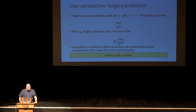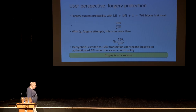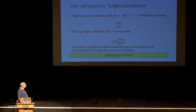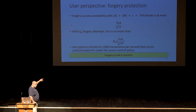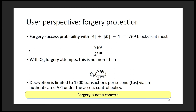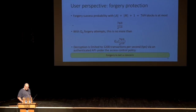What is the forgery protection? The forgery success probability in AES-GCM depends on the longest message. The number of blocks in the AAD plus the number of blocks in the message plus one — at most 769 blocks. So the forgery probability is 769 over 2^{128}. Decryptions happen in this system at at most 1,200 times per second. So forgery is not a threat in this system for whatever number of attempts you can possibly do.